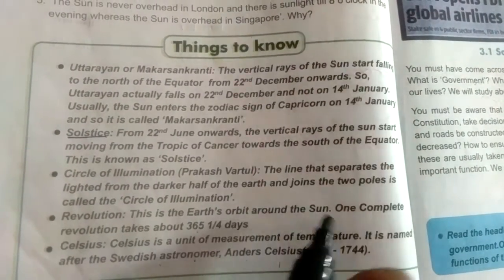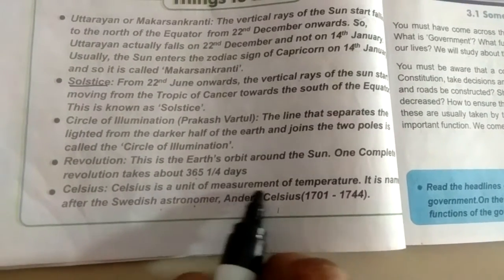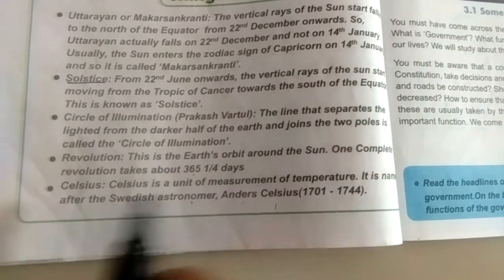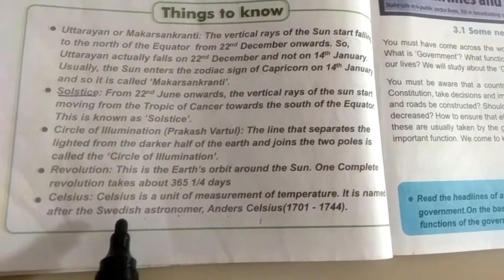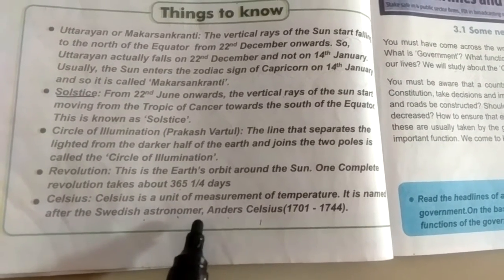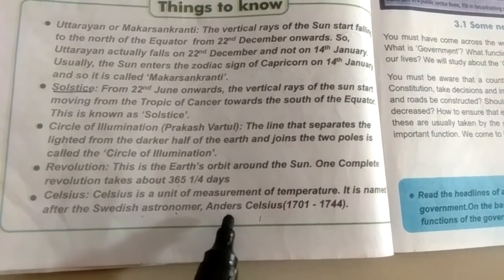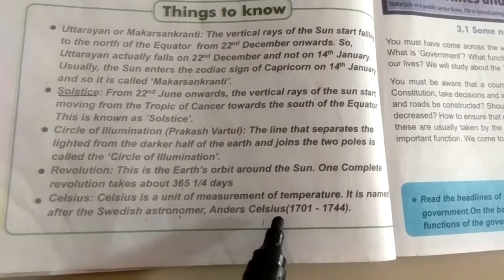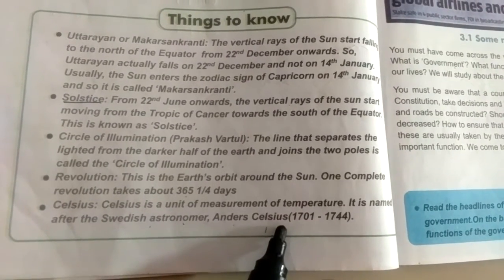Regarding revolution — one complete revolution takes about 365 and one-fourth days. Celsius is a unit of measurement of temperature, named after the Swedish astronomer Anders Celsius.